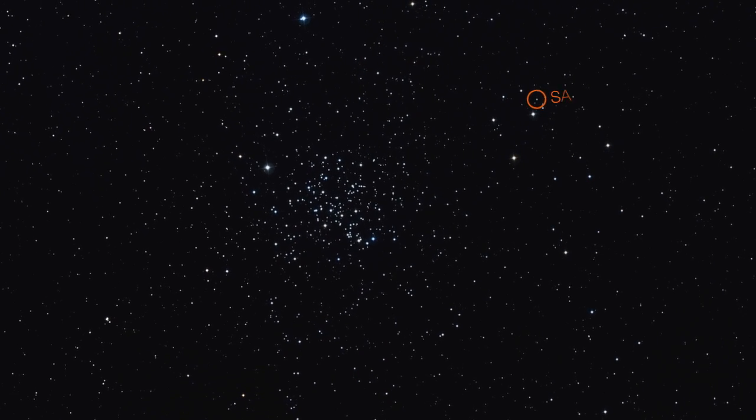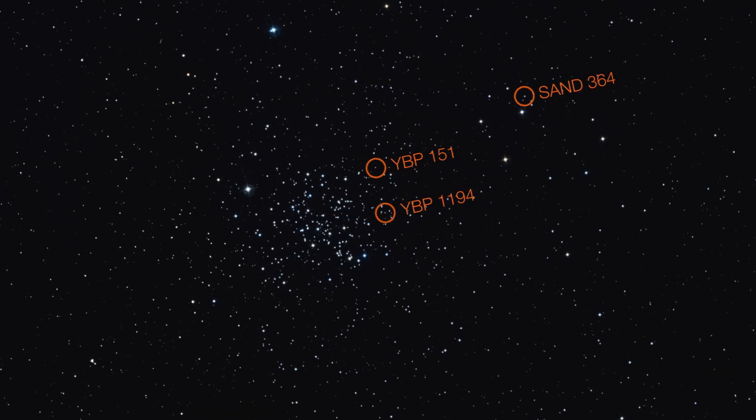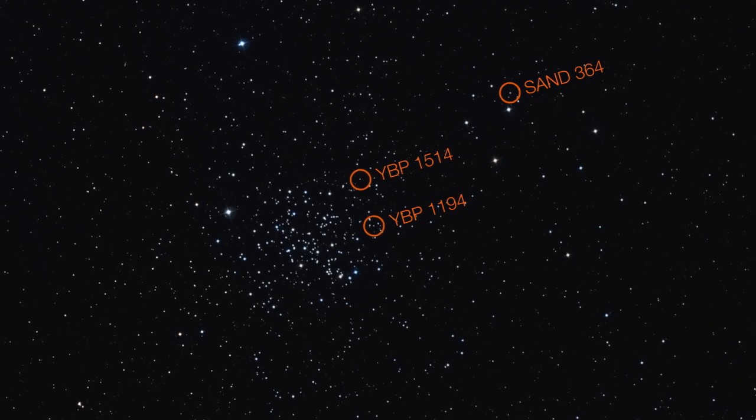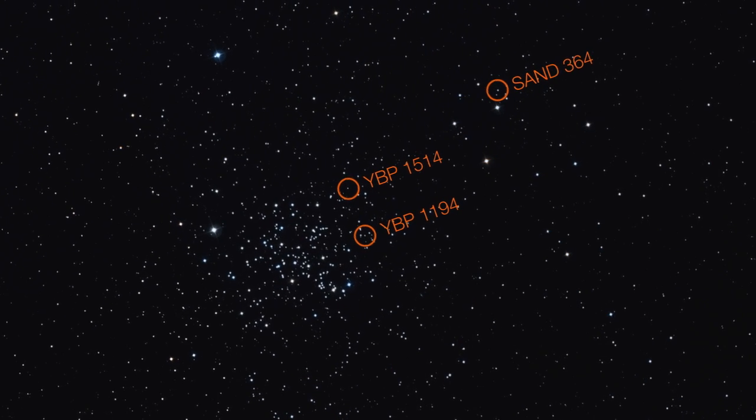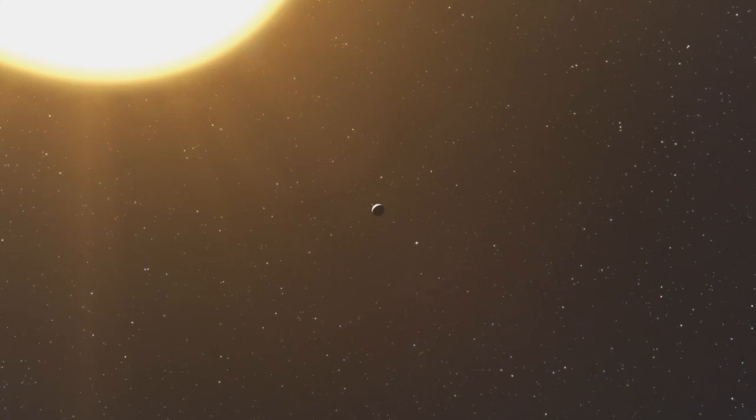Three planets were discovered in the cluster. Two of these planets orbit stars similar to the Sun, and one orbits a more massive and evolved red giant star.